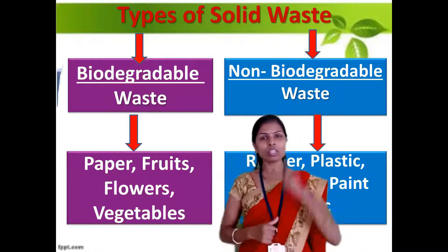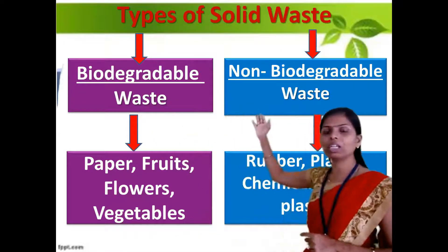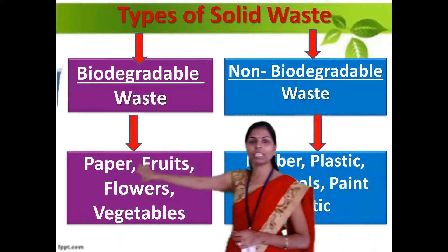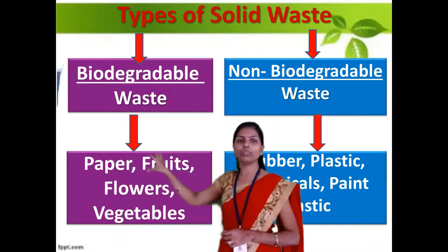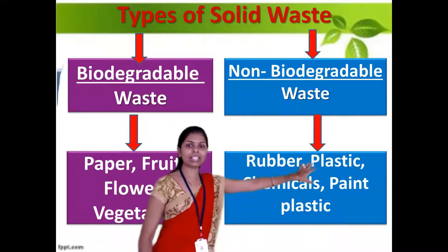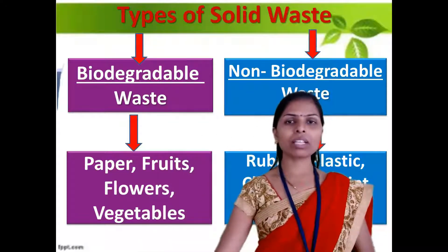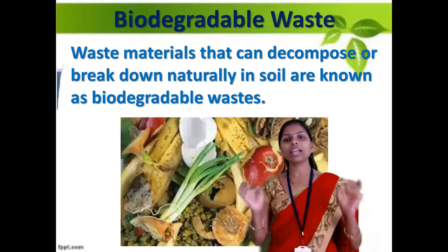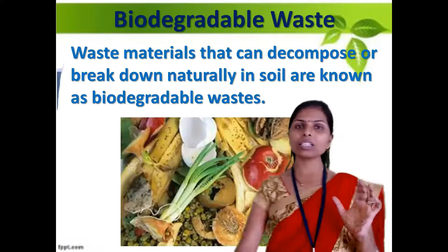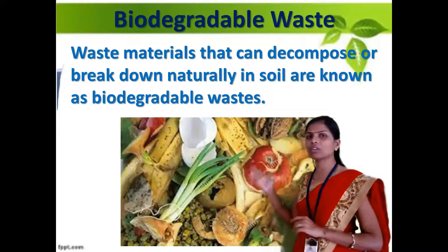Next we are going to learn about types of solid waste. There are two types — the first one is biodegradable waste and the second one is non-biodegradable waste. Biodegradable waste includes paper, fruits, flowers, vegetables, and many more. Non-biodegradable waste contains rubber, plastic, and chemicals. The waste materials that can decompose or break down naturally in the soil are known as biodegradable waste. In this picture we can see different types of kitchen waste and fruit peels, which are examples of biodegradable waste.